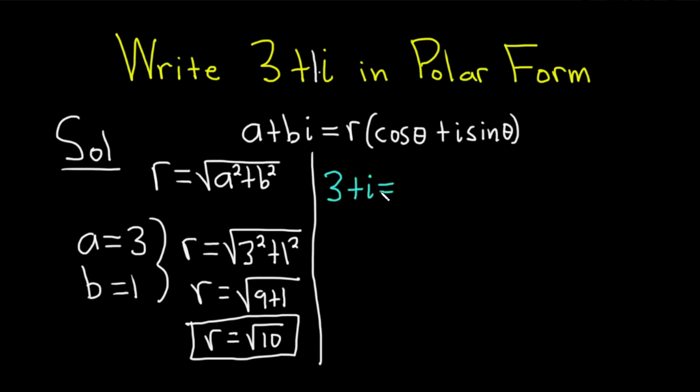and then we set it equal to R, which is the square root of 10 in parentheses, and then we have cosine theta plus i sine theta. And this is a very primitive way of doing it.